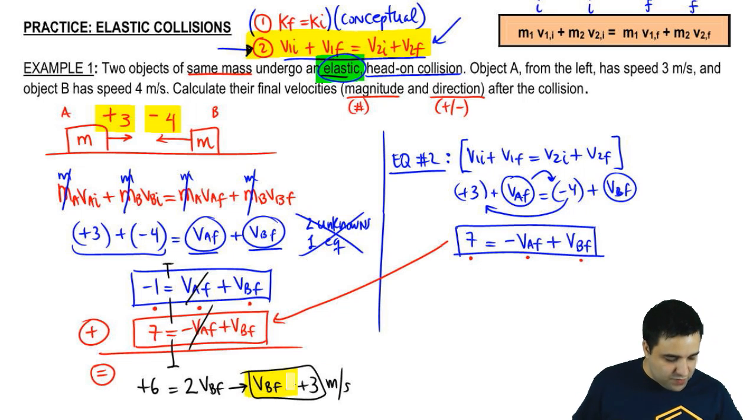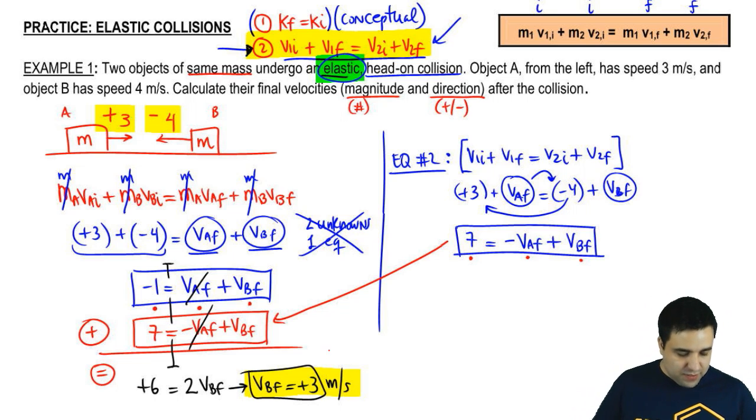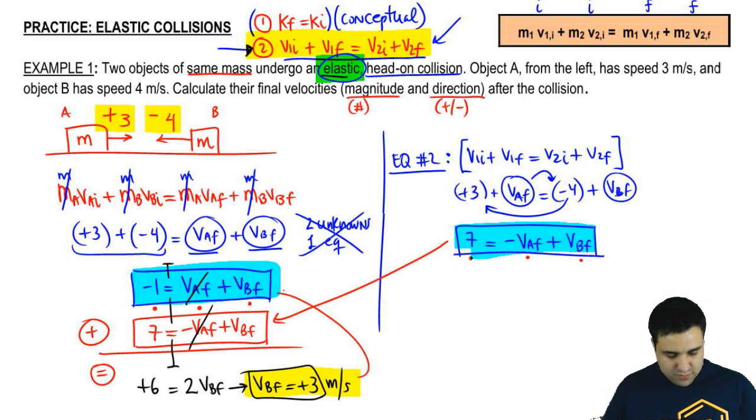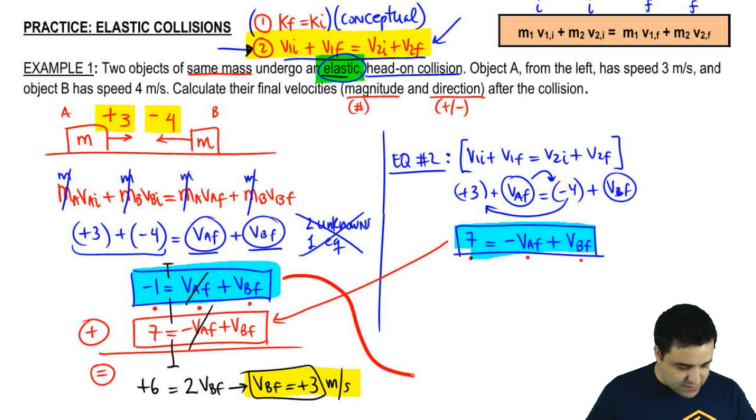Now that I got one of the two velocities, I can simply get that number and plug it into either one of the two original equations to find VAF. I'm going to plug it into this one here, just because that equation, the VA, is already positive.